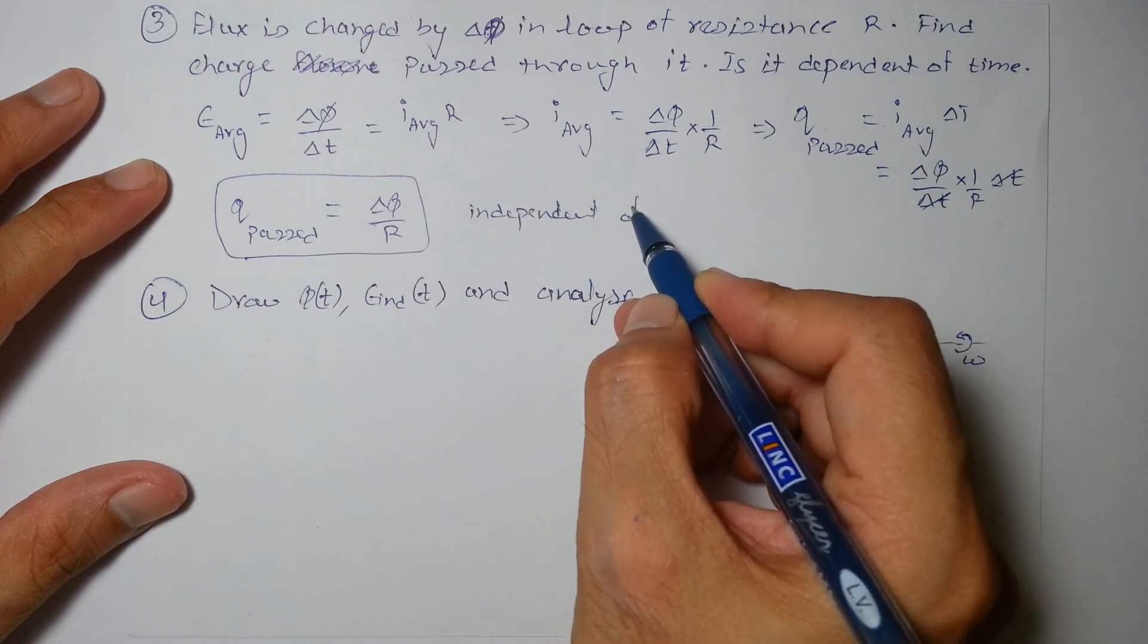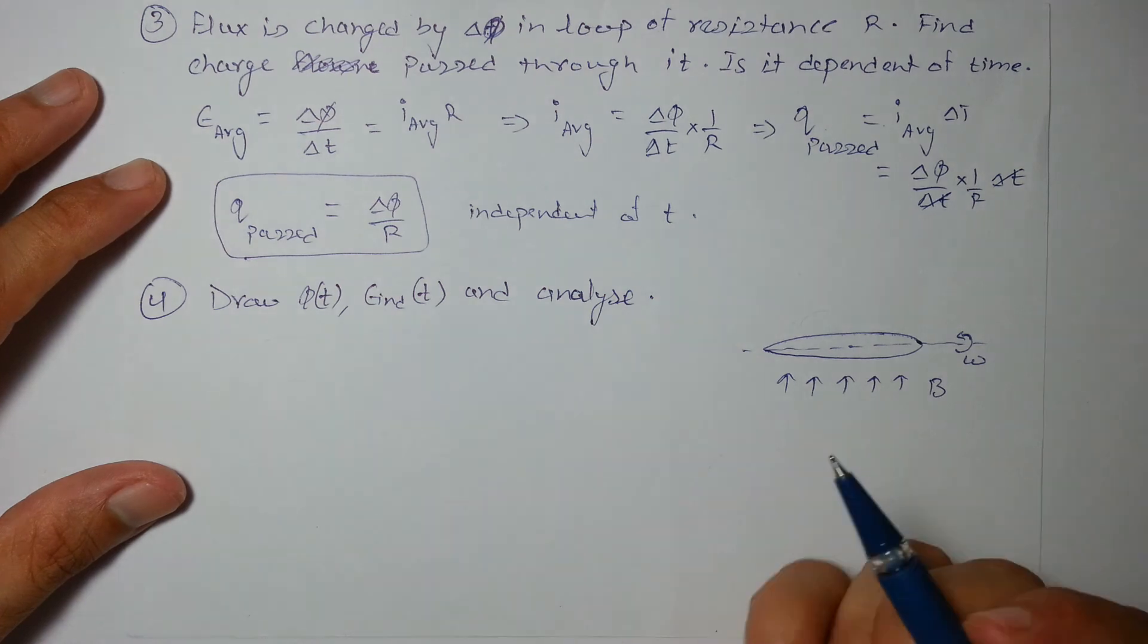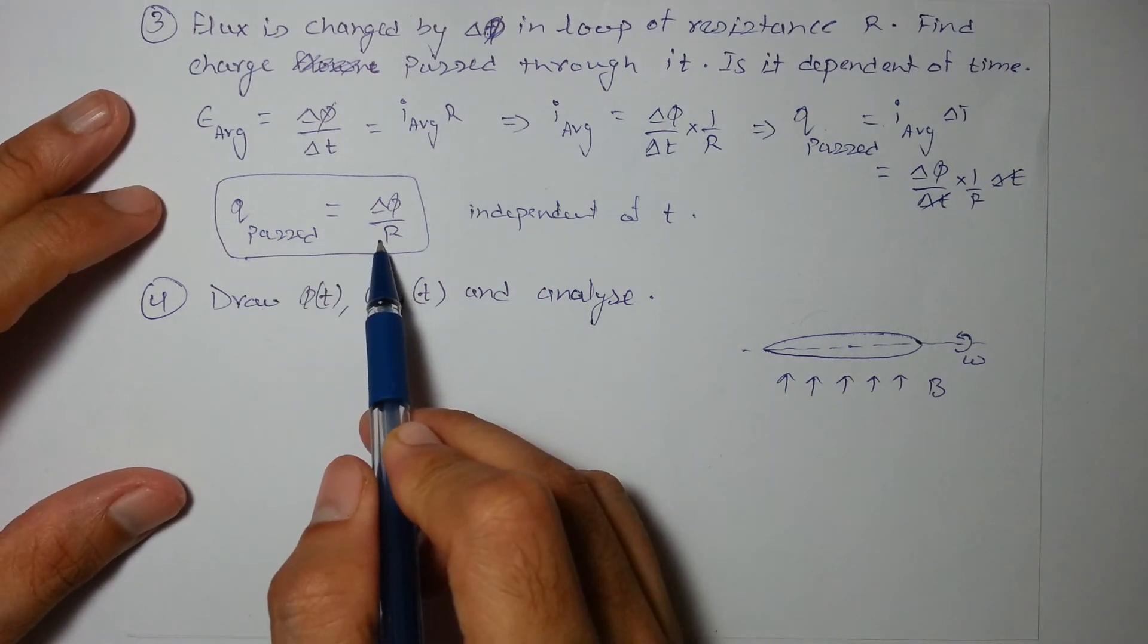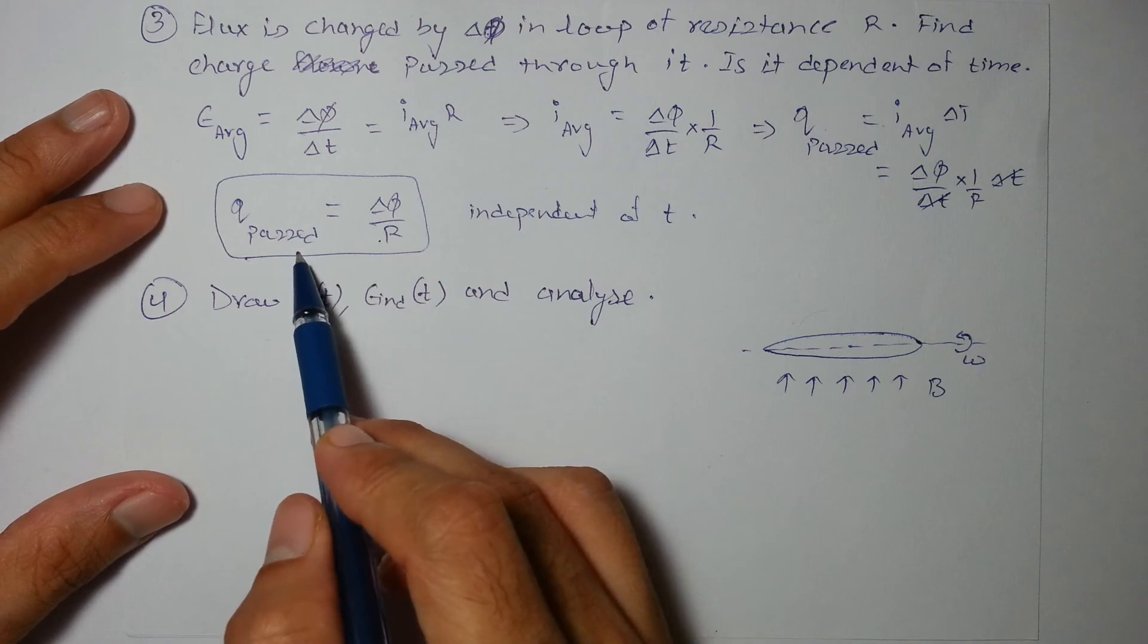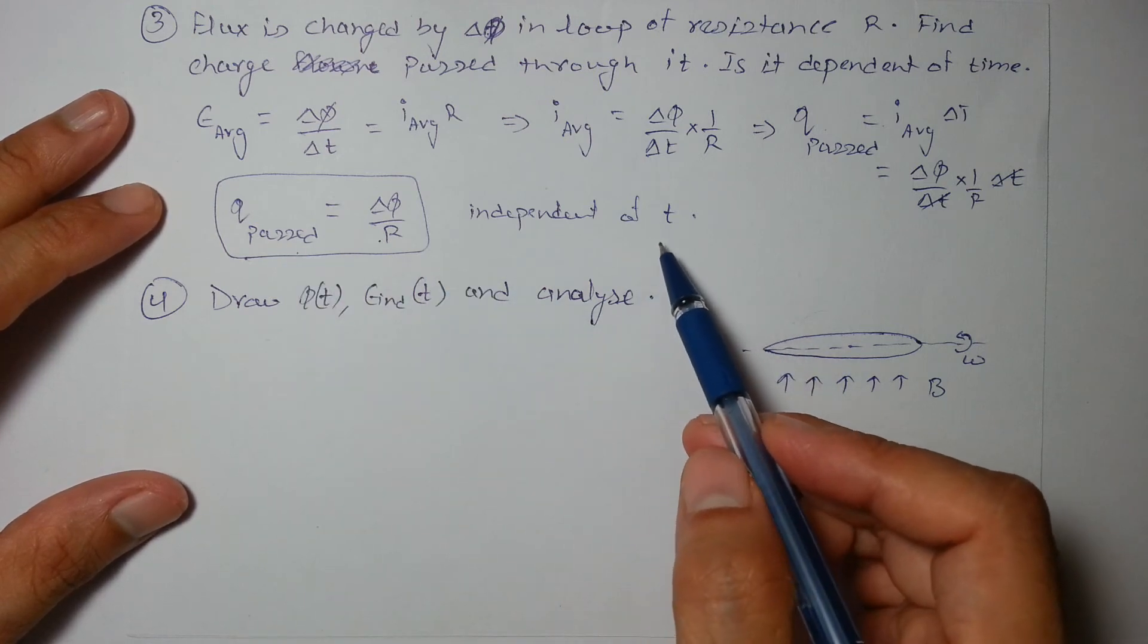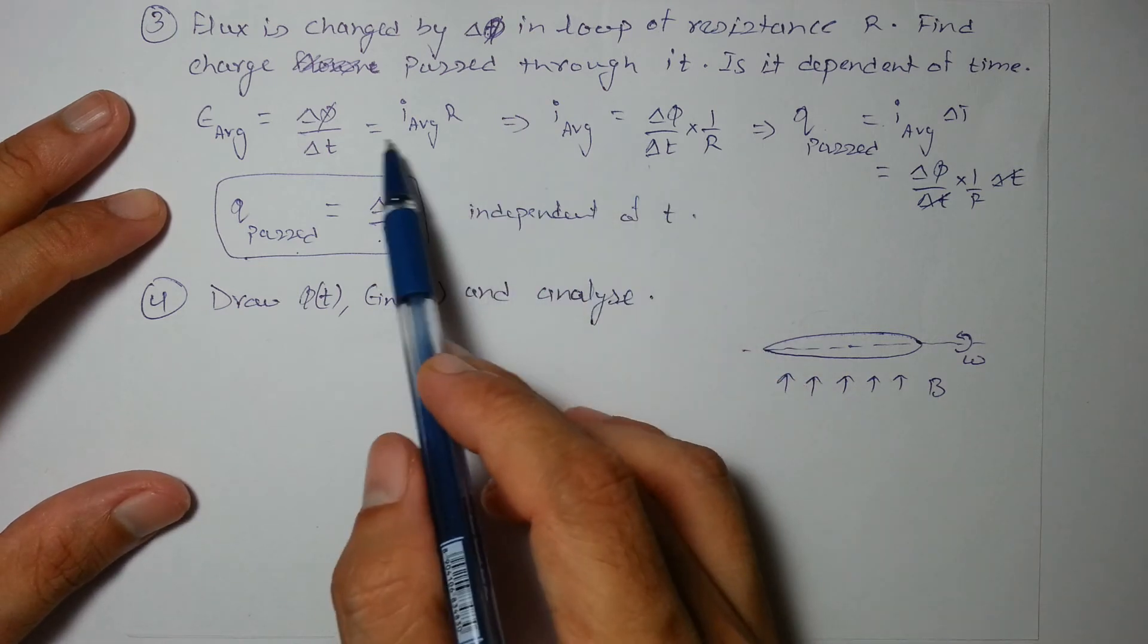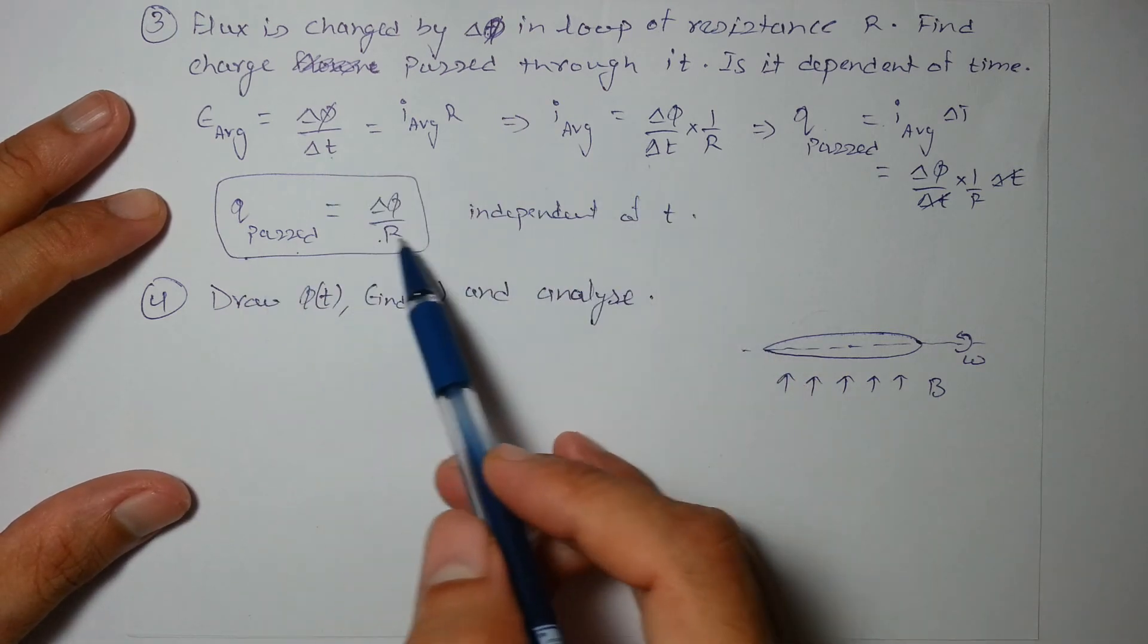Independent of time. No matter how fast or how slow you change the flux, the charge passed will be this. But yes EMF induced or the current, the value of current is dependent on time. But not the charge passed.